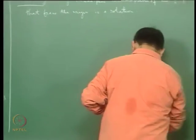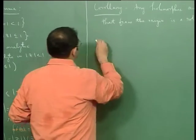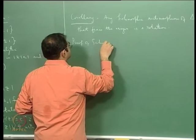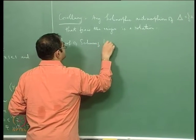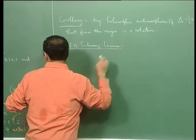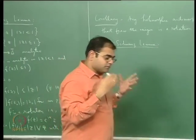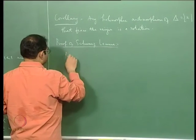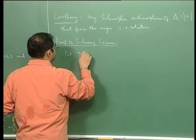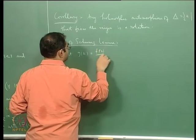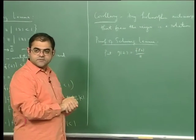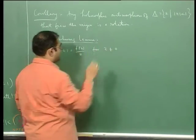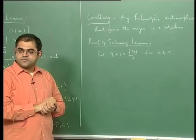Let us try to prove these things. The idea of the proof is very easy — you are just going to apply the maximum principle and nothing else. What you do is put g(z) = f(z)/z for z not equal to 0, because we are dividing by z.